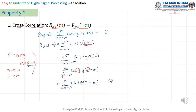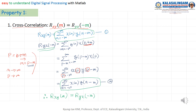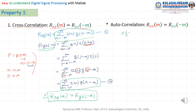Now you can see that equation 1 and equation 2 are the same. Therefore, rxy(m) equals ryx(-m). We have proven this result. For auto-correlation, you can substitute y with x, giving rxx(m) equals rxx(-m), which means auto-correlation is an even function about m equals 0. This is one of the properties of cross-correlation.